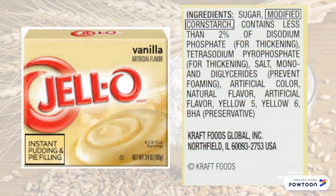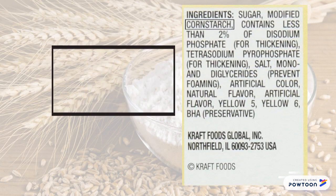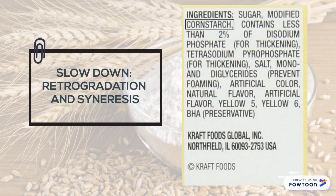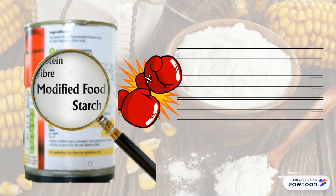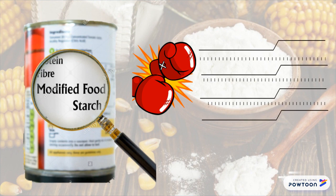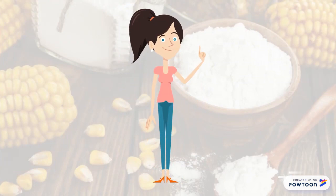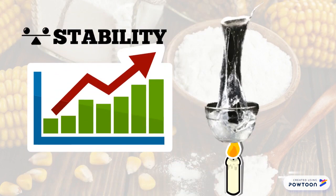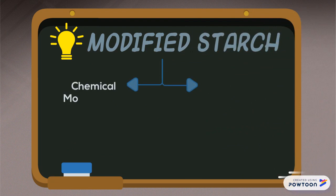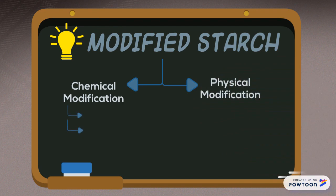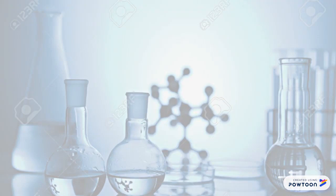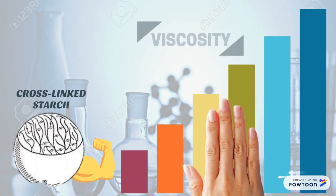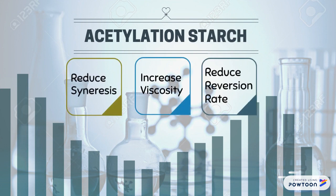Besides that, modified starch can also be used to slow down the process of retrogradation and syneresis. The modification of starch often involves disruption of the tendency of linear molecules to retrograde to an insoluble form on freezing and aging. The modification can also increase the stability of the food and achieve the desired viscosity with minimum heating. Starch modification can be classified into chemical modification or physical modification. Examples of chemical modifications are cross-linking and acetylation. Cross-linked starch will have higher resistance in preventing the loss of viscosity, while acetylated starch will reduce syneresis, increase viscosity, and reduce reversion rate.